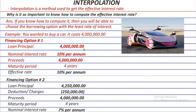In option 1 you only need to pay 4 million principal at the end of 4 years, while in option 2 you need to pay 4 million 250 thousand. So the question is, which of the 2 options will you select? For that, we need to compute the effective rate for the second option through interpolation.